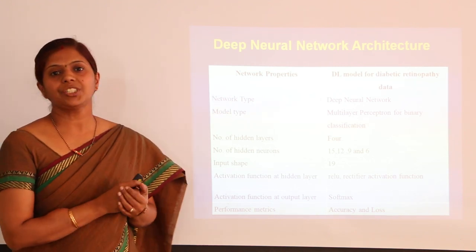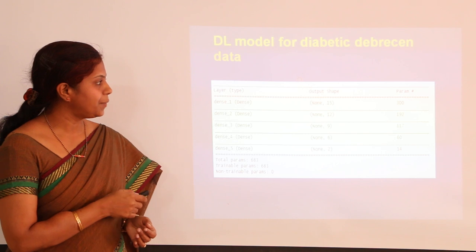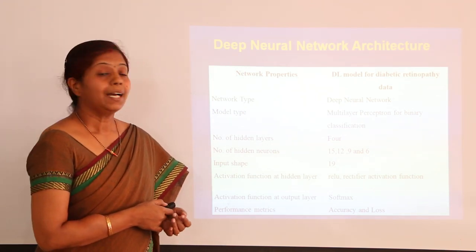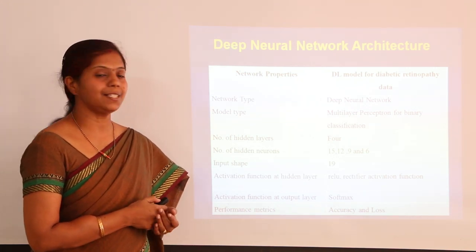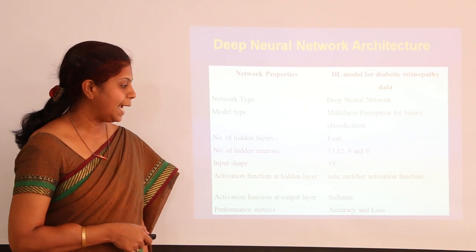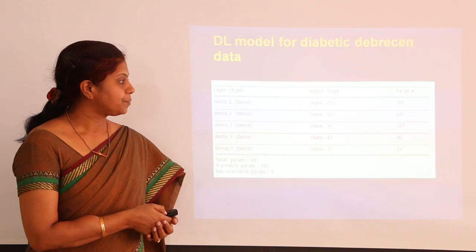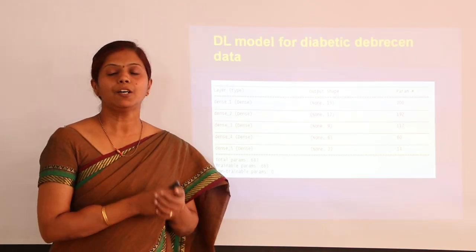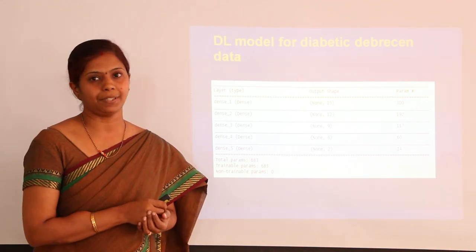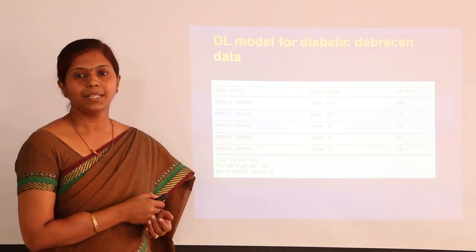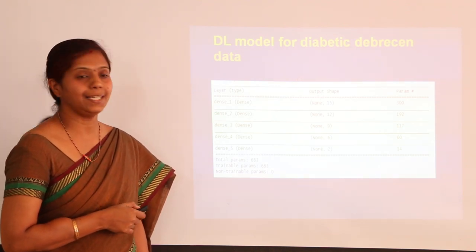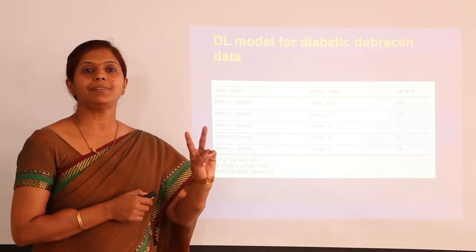The deep neural network architecture derived has the following properties: network type is deep neural network, model type is multi-layer perceptron for binary classification, having 4 hidden layers, input shape of 19, with ReLU and Softmax as activation functions, and accuracy and loss as the performance metrics. The model summary shows 4 hidden layers with number of neurons 15, 12, 9, and 6 respectively, and the output layer having 2 neurons since we have 2 classes.